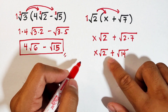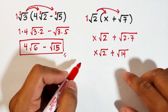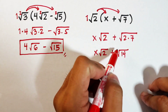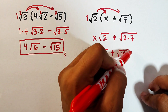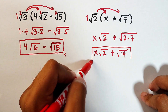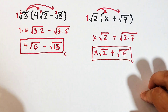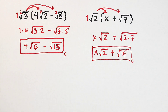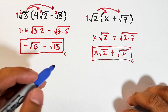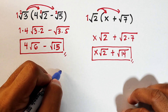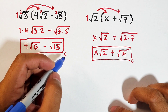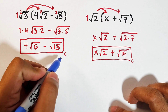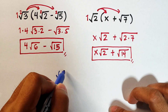As you can see, the two radicands are different, but we cannot simplify the square root of fourteen further. So in this case we can simply declare that the final answer is x square root of two plus the square root of fourteen.